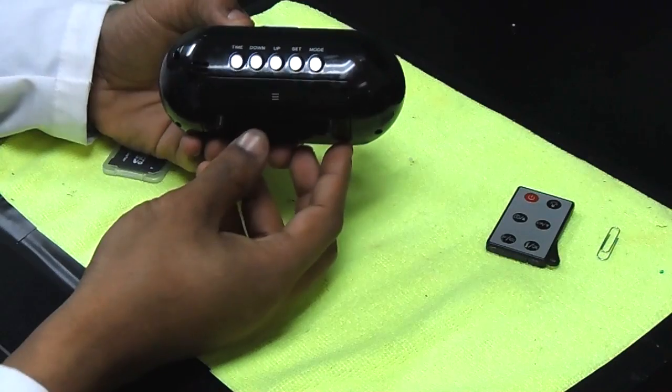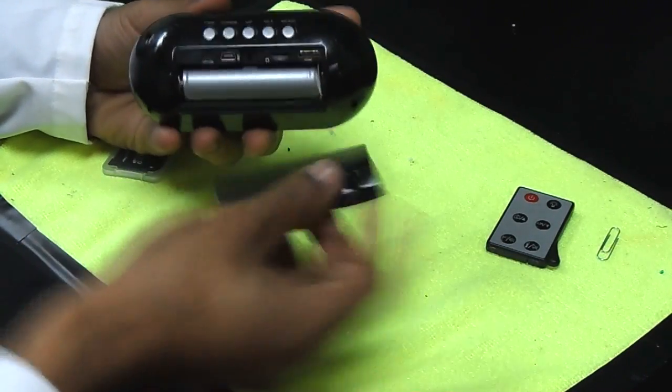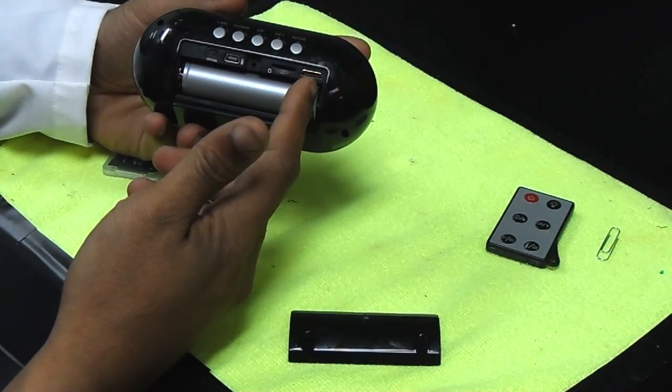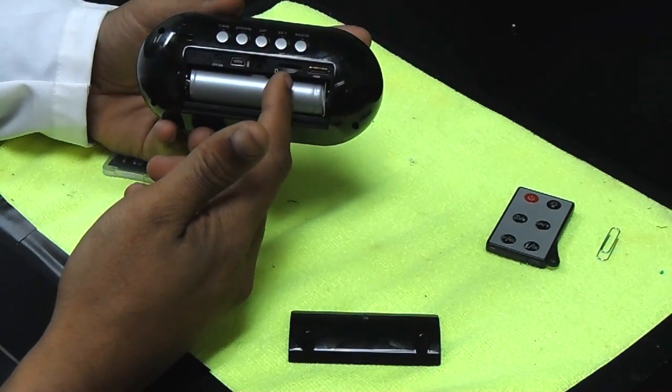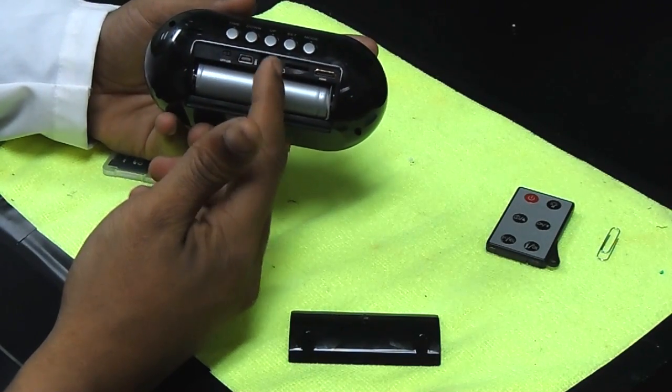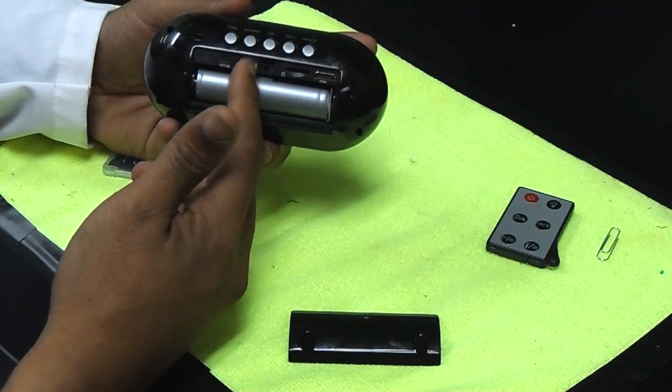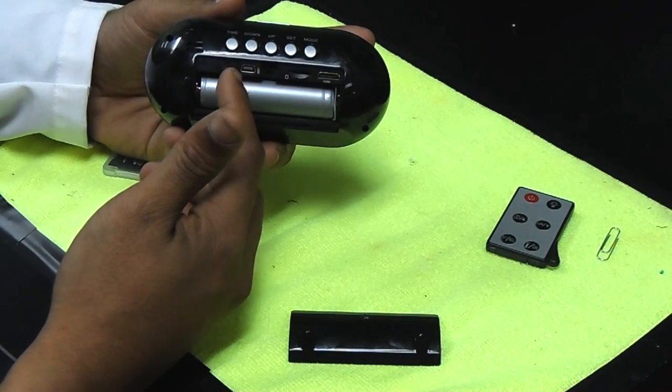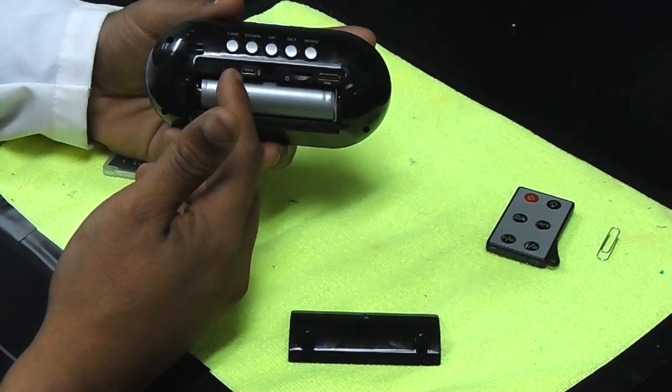When you turn over your mini clock cam and remove your battery cover, the first thing you're going to notice is your HDMI port. Next to that you have your microSD card port. Next you have the USB port and finally you have the power switch for the internal camera inside the clock.